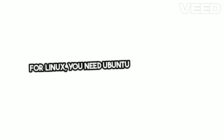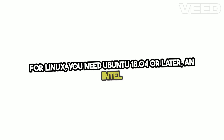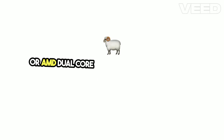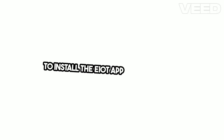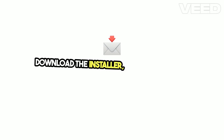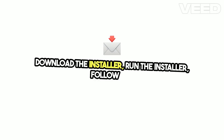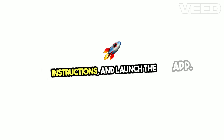For Linux, you need Ubuntu 18.04 or later, an Intel or AMD dual-core processor, 2GB of RAM, 100MB of free space, and a stable internet connection. To install the eIoT app via the official way on Windows, visit the eIoT official website, download the installer, run the installer, follow the instructions, and launch the app.